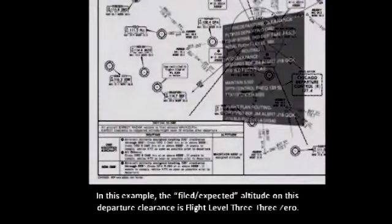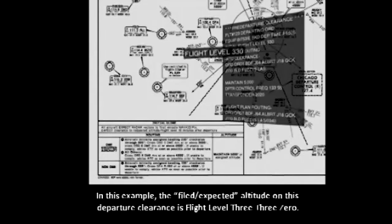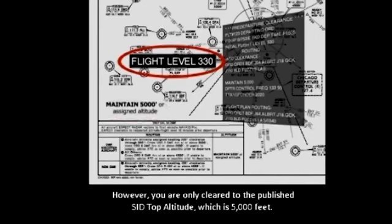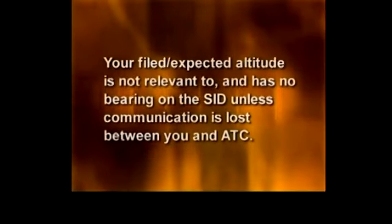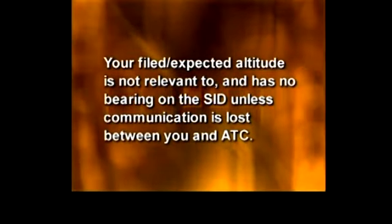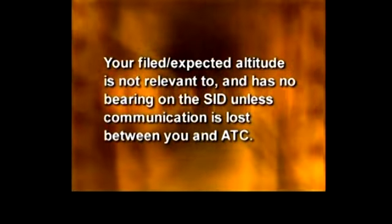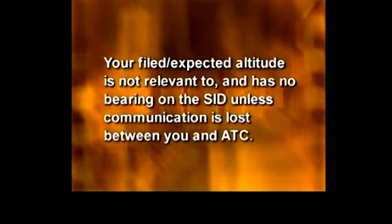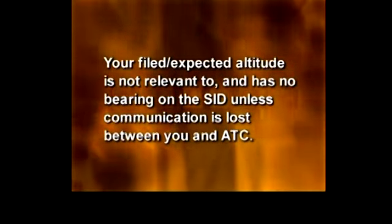In this example, the filed expected altitude on this departure clearance is flight level 330. However, you are only cleared to the published SID top altitude, which is 5,000 feet. Your filed expected altitude is not relevant to and has no bearing on the SID unless communication is lost between you and ATC.